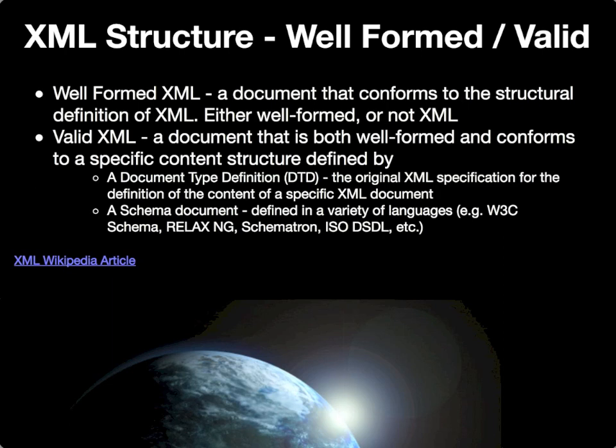That content structure is defined typically in one of two ways. One is using a document type definition, or DTD, which was the original specification for defining the content of a given XML document, typically defined in the context of particular applications using XML to represent data. More recently, the concept of schemas has been developed, with a number of languages for defining schemas, where schemas are a little bit more specific than DTDs in defining the structure and content of what would be considered a valid XML document.